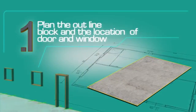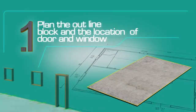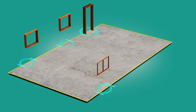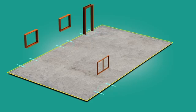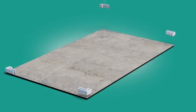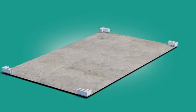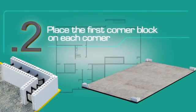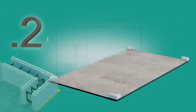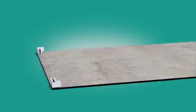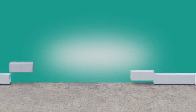Plan the outline of the block and the location of the door and window openings on the footing or slab. Place the first corner blocks on each corner, then lay the straight blocks toward the center of each wall segment.